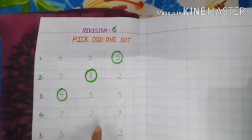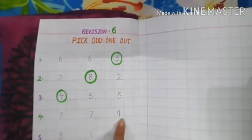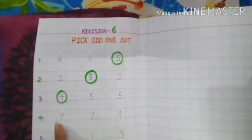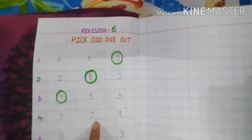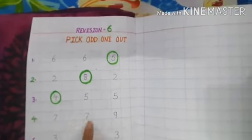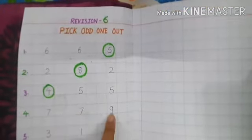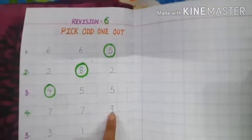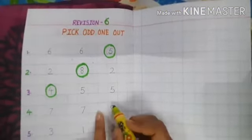Come to the fourth point. Numbers 7, 7 and 9. Both 7s are brothers — they are the same. So 9 is the odd one out.